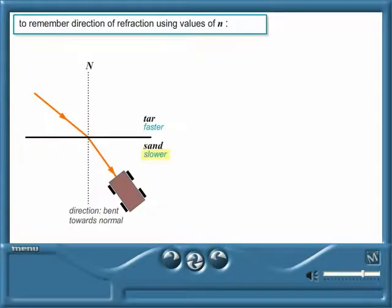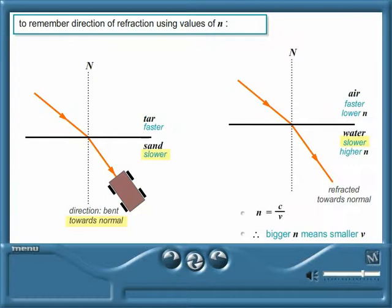Remember the trolley? You know that its path bent towards the normal when it moved from tar onto sand, because its wheels go slower in sand. For light, a bigger refractive index means that light travels slower. So for the same reason, light is refracted towards the normal when travelling from air, with a lower refractive index, into water, with a higher refractive index.